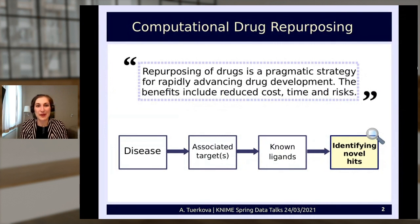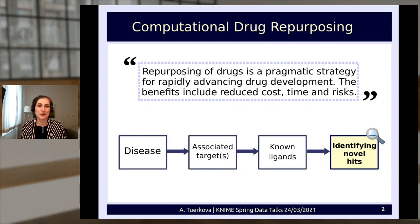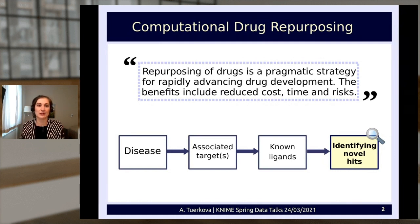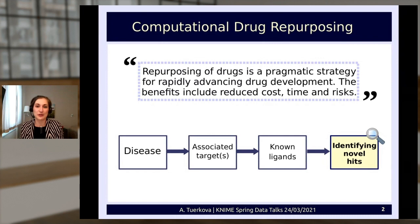As already mentioned, repurposing of drugs is a great strategy to advance drug development. In our pipeline we start with the definition of a disease for which we want to find effective drug candidates. The first step is to find the targets involved in that disease, which leads us to finding ligands shown to have known activity against those targets. By knowing how the active ligands look from a structural perspective, we can use this knowledge to identify novel hits using similarity searches.